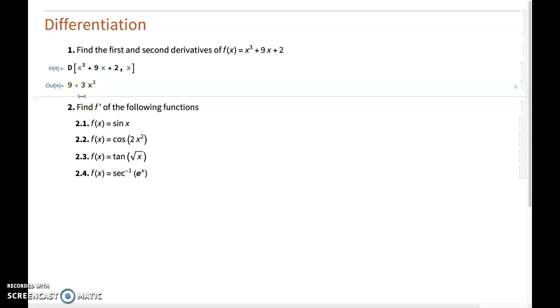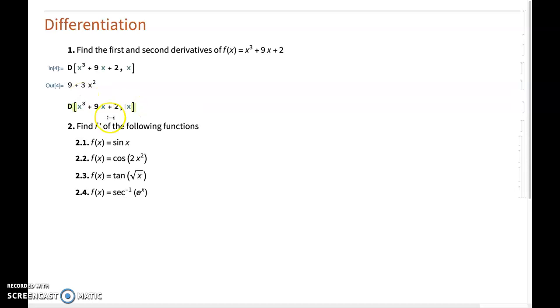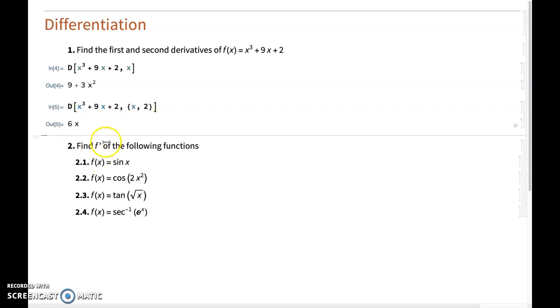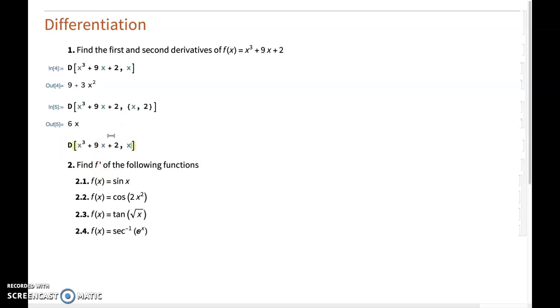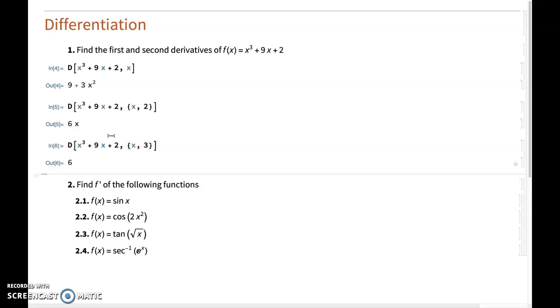However, if I am interested in finding not the first derivative but a higher order derivative, the second for example, what I'm going to do is copy this line of code, paste it here, and this time I'm going to indicate that I am still interested in differentiating with respect to x, but I'll have here a comma and then a 2. This way I'm indicating that this is the second derivative, getting 6x. If I were to find the third derivative also, I would write here 3 and run the code, getting 6.